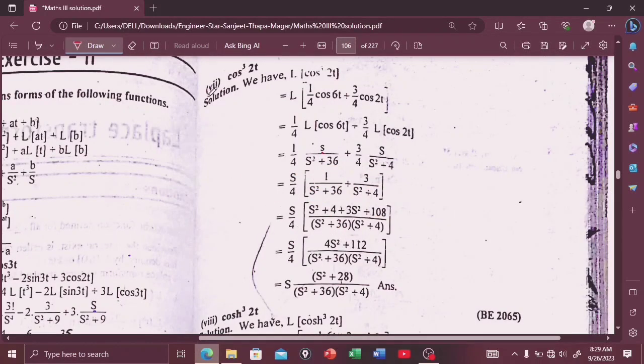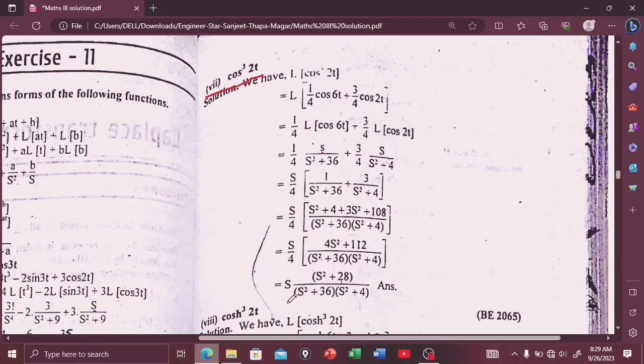The Laplace transform of cos³(2t) is s(s² plus 28) divided by (s² plus 36)(s² plus 4).